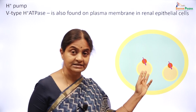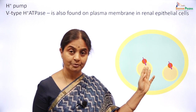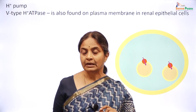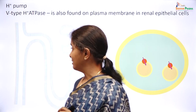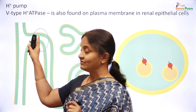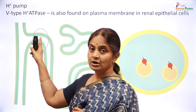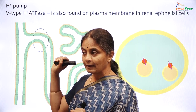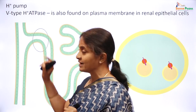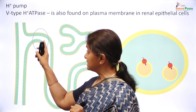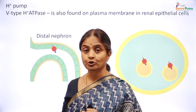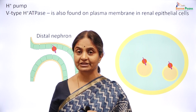The V-type ATPase proton pump is found on the vesicular membrane, and it may also be found in the plasma membrane. We already saw that in the distal renal tubular epithelium, we have the hydrogen-potassium pump on the luminal border. More important than the hydrogen-potassium pump for proton secretion in this part of the tubule is the V-type ATPase, also located in the luminal border of the distal renal tubular epithelium.